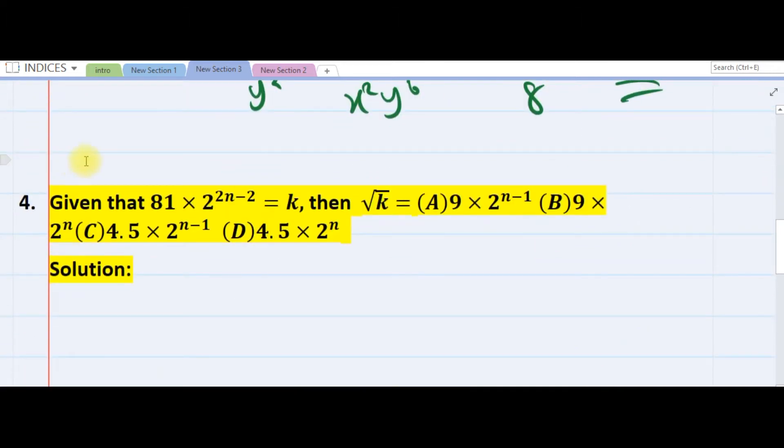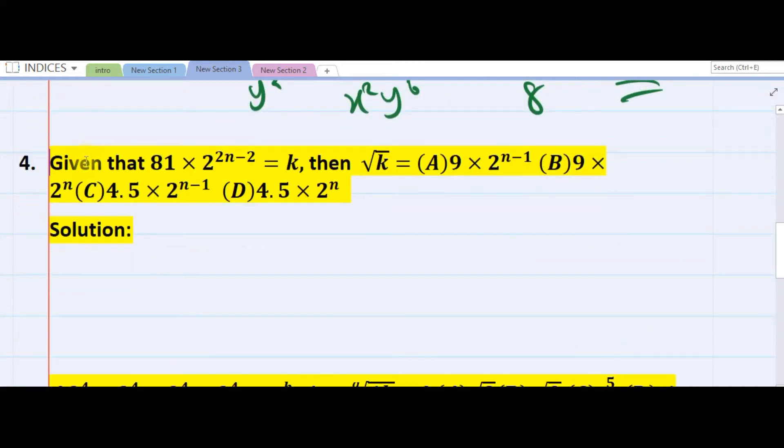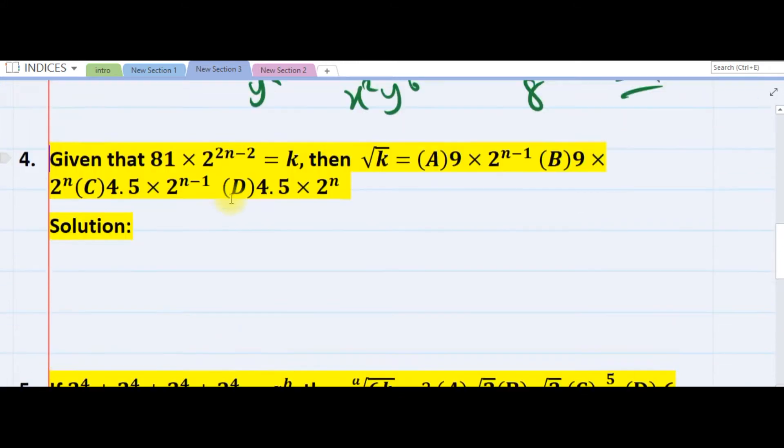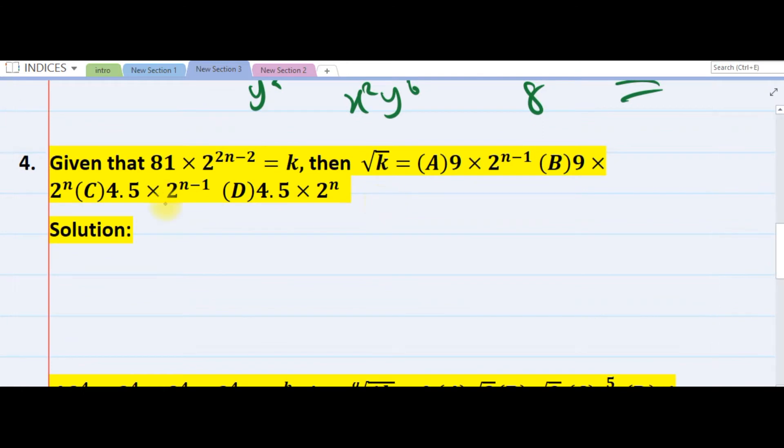So the next question - we are given that something equals k, and we're asked to find the square root of k. They gave us that k equals 81 times 2 raised to power 2n minus 2.